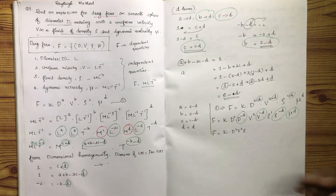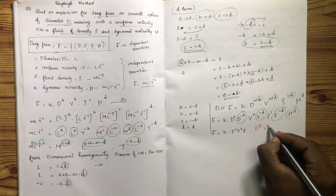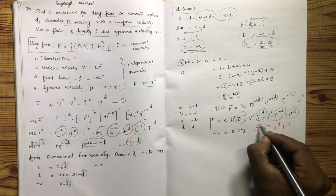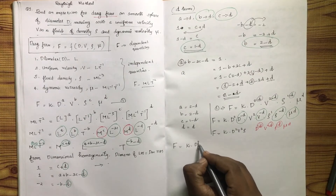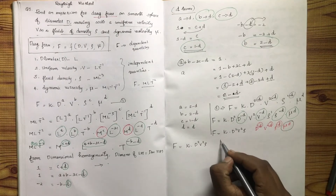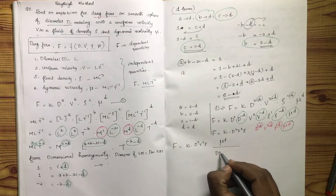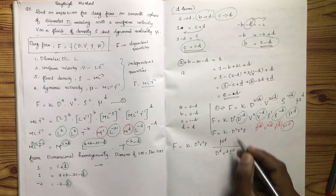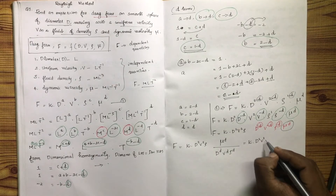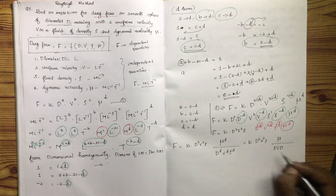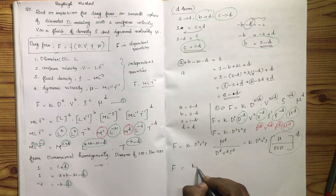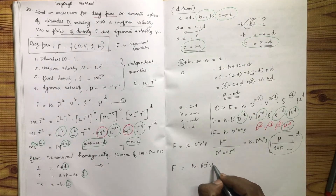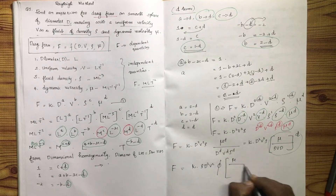Substituting these values back, the equation becomes F equals k into D squared, V squared, rho, into mu raised to D, divided by D raised to D, V raised to D, rho raised to D. This simplifies to F equals k into rho D squared V squared into function of mu divided by rho V D.